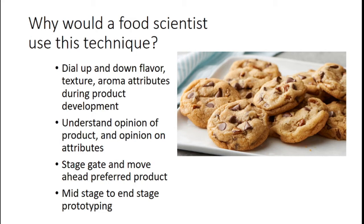It also doesn't work well with negative attributes — you can't ask if the artificial preservative flavor is 'just about right' or 'way too little.' It only works for positive attributes, so be cognizant of how you're designing your questionnaire. Food scientists use these hedonic or preference questions when taking a mid-stage prototype toward the end stage — dialing attributes up and down, getting a better sense of how much people enjoy the product.